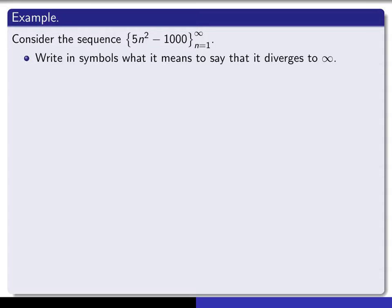So now let's illustrate this by an example. Take the sequence whose nth term is 5n squared minus 1,000. Intuitively, I think you'll agree that this is a sequence which seems to diverge to infinity, but I want you to write down in symbols the precise meaning of that. So put your video on hold and write it out in symbols and be very specific with this particular sequence.